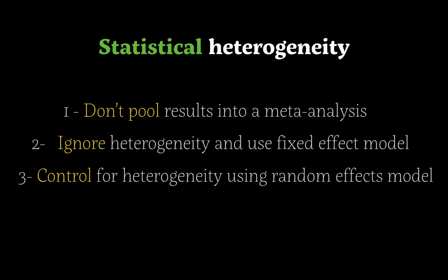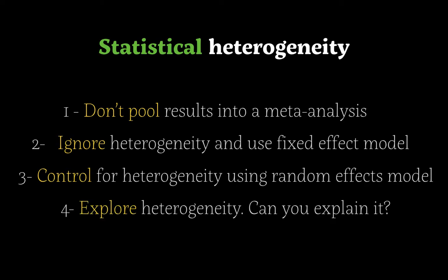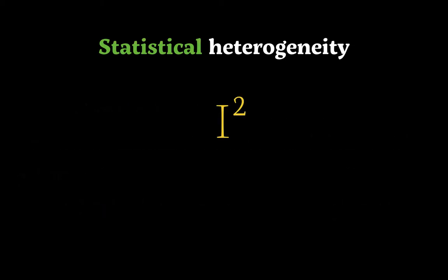The opposite approach is to use a random effects model, which takes the potential for heterogeneity into account and, within the meta-analysis software, controls and adjusts the pooled effect to account for that heterogeneity. A fourth option is to explore the heterogeneity — to explain it and dive into the reasons why it exists within your study.